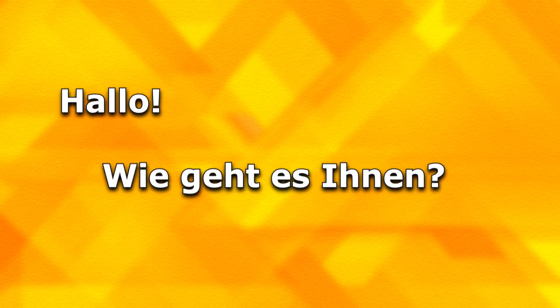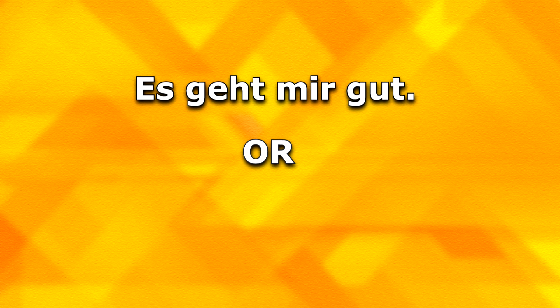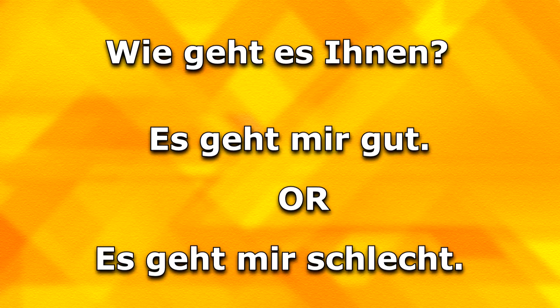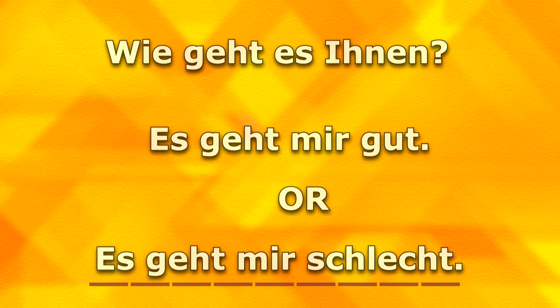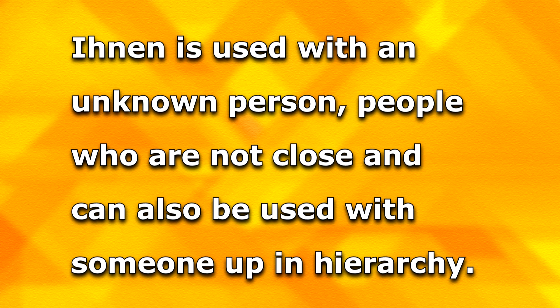This is actually a shortened way of answering. The detailed sentence would be 'Wie geht es Ihnen' and the response is 'Es geht mir gut' or, for the negative response, 'Es geht mir schlecht.' We must remember that 'Ihnen' is used with people unknown to us, people who are not very close to us, or someone higher in hierarchy. With people who are close to us — family, friends, relatives — in that case, we make use of 'dir.'